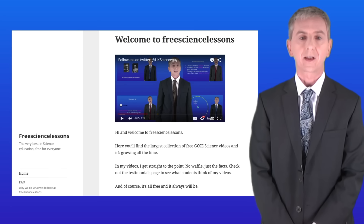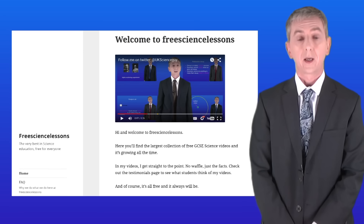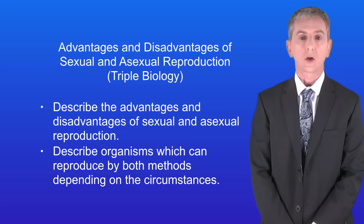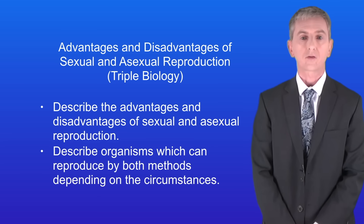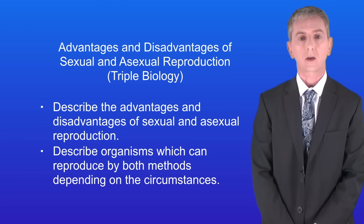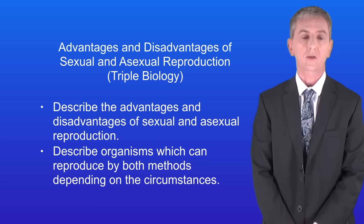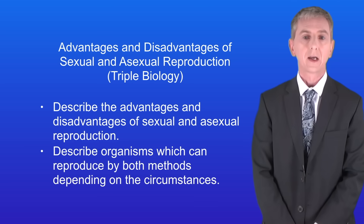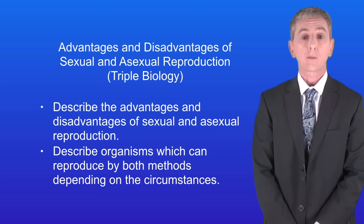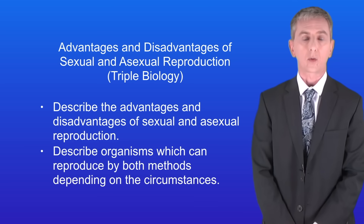Hi and welcome back to freesciencelessons.co.uk. By the end of this video you should be able to describe the advantages and disadvantages of sexual and asexual reproduction. You should then be able to describe organisms which can reproduce by both methods depending on the circumstances, and this is for triple biology students only.